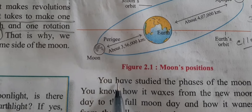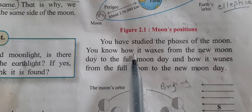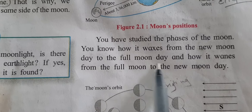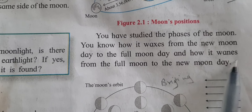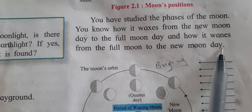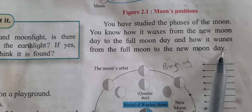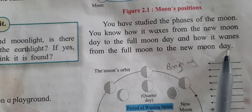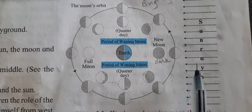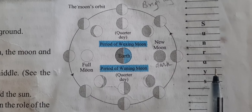Now, you have studied the phases of the moon. You know how it waxes from the new moon day to the full moon day, and how it wanes from the full moon to the new moon day. You will see figure 2.2, that is the waxing and waning moon — the phases of the moon.